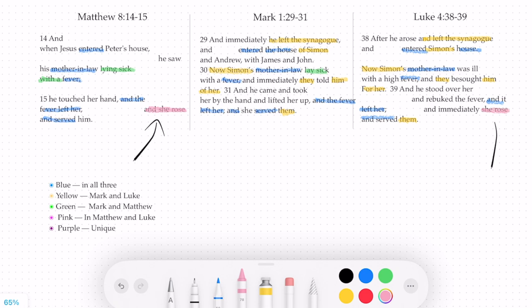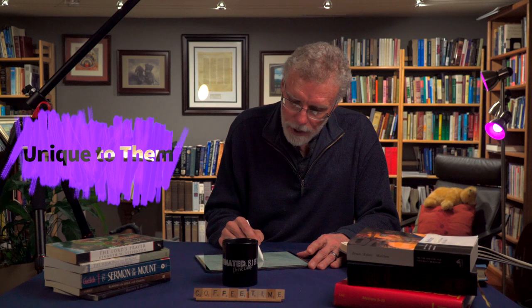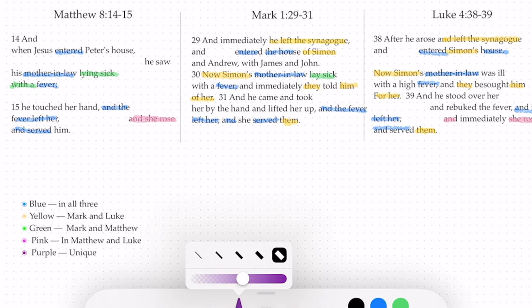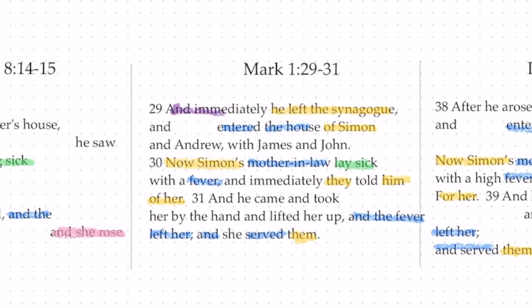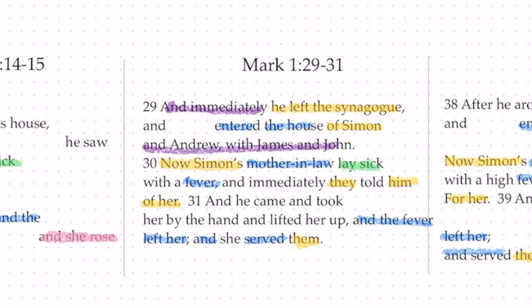Now we need to look at what is unique to each particular gospel, and we're going to use purple for that. Let's color Mark in first. Only in Mark's gospel are Andrew, James, and John mentioned, and how they tell Jesus about her. Immediately after this, Jesus comes and he takes her by the hand and lifts her up. He depicts it as a very human interaction between the disciples, Jesus, and Peter's mother-in-law.